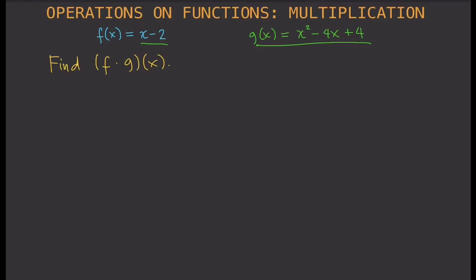Having said that, we can perform multiplication on functions. Here we are asked to find f times g of x, given f(x) = x - 2 and g(x) = x² - 4x + 4. How do we find f times g of x? The better question is, what is f times g of x? What does this mean?